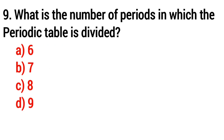Question 9: What is the number of periods in which the periodic table is divided? The answer is Option B: 7.